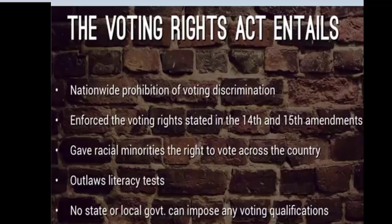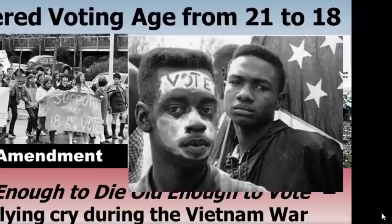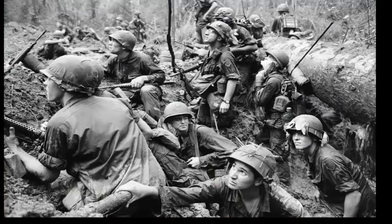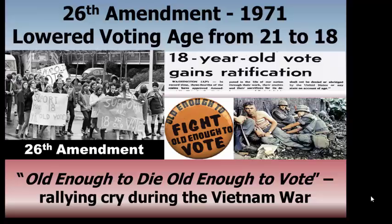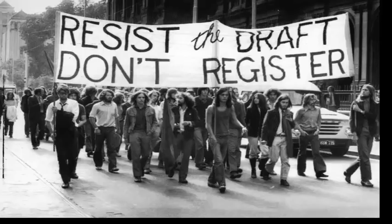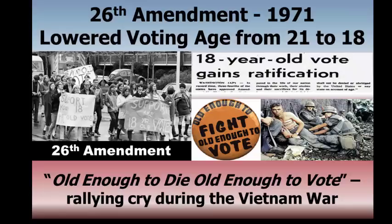Our last voting amendment you need to know is the 26th amendment, which lowered the voting age from 21 to 18. This amendment was especially important as it was passed in 1971, right in the heat of the Vietnam War — a war in which 600,000 18 to 21 year old men were drafted to fight in a war imposed on them by a government they weren't even allowed to vote for. The rallying cry 'old enough to fight, old enough to vote' demonstrated the need to lower the voting age from 21 to 18.